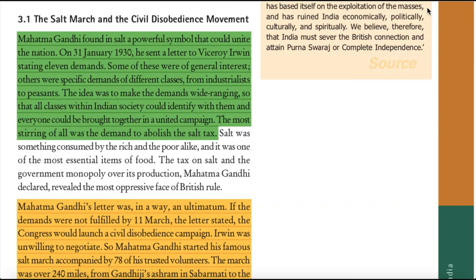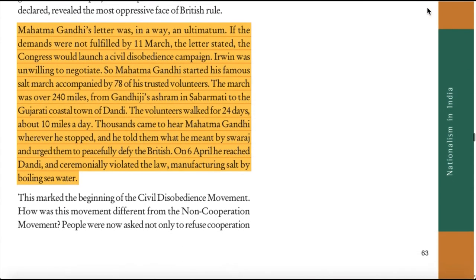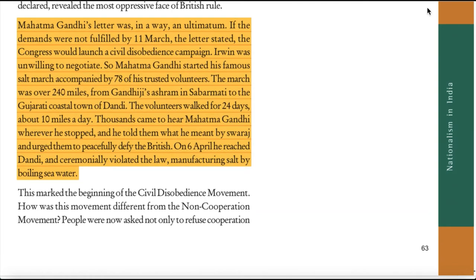Mahatma Gandhi's letter was in a way an ultimatum: if the demands were not fulfilled by 11th March, the Congress would launch a civil disobedience campaign. Irwin was unwilling to negotiate. So Mahatma Gandhi started his famous salt march accompanied by 78 of his trusted volunteers. The march was over 240 miles from Gandhiji's ashram in Sabarmati to the Gujarat coastal town of Dandi. The volunteers walked for 24 days, about 10 miles a day. Thousands came to hear Mahatma Gandhi wherever he stopped. On 6th April, he reached Dandi and ceremonially violated the law by manufacturing salt by boiling seawater. This marked the beginning of the civil disobedience movement.